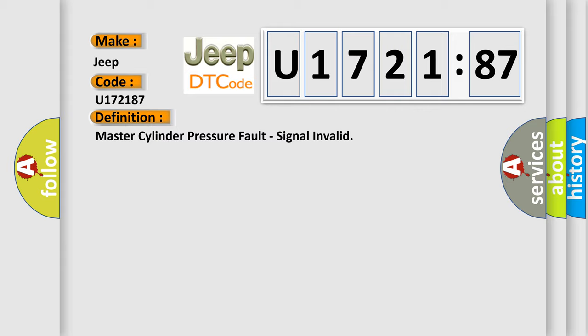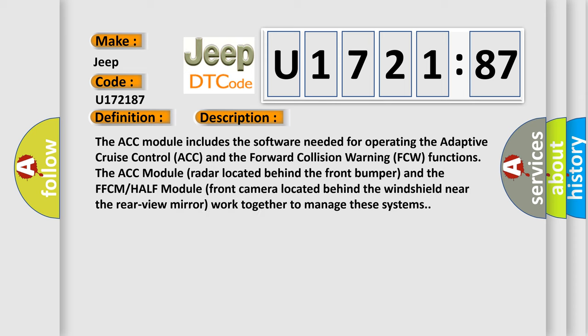And now this is a short description of this DTC code. The ACC module includes the software needed for operating the Adaptive Cruise Control ACC and the Forward Collision Warning FCW functions.